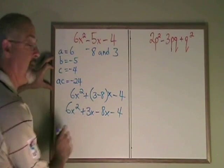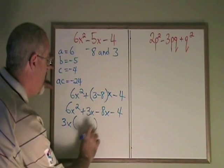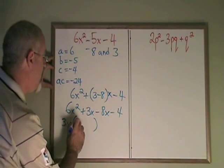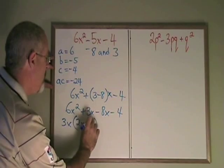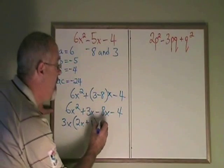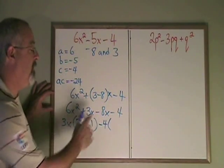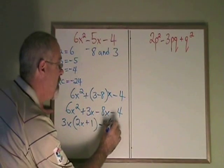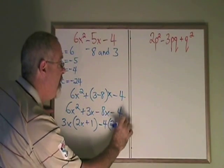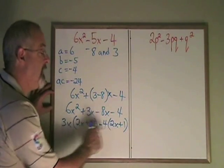The greatest common factor of 6x squared and 3x is 3x. And if I factor out the 3x, I get 2x plus 1. The greatest common factor of negative 8x and minus 4 is going to be minus 4. And if I factor minus 4 out of these two terms, I get 2x plus 1. As I expected in a grouping, the contents of the brackets are the same.